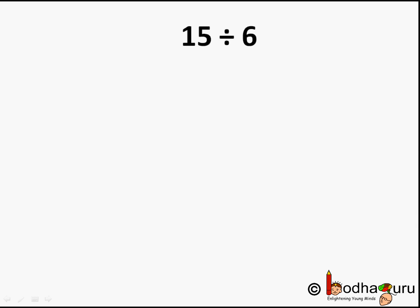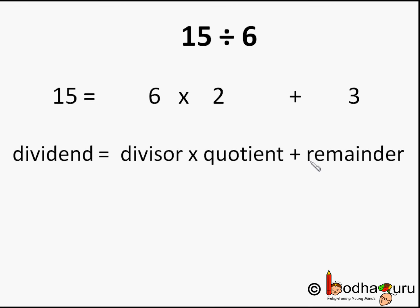If we do 15 by 6, we get 2 as quotient and 3 as remainder, and we can actually write it as 15 is equal to 2 times 6 plus 3. That is, dividend equal to divisor into quotient plus remainder. Here 6 is the divisor, 2 is the quotient and 3 is the remainder. So we can write 15 = 6 × 2 + 3.